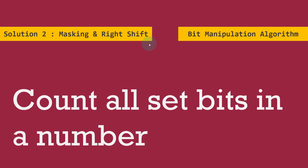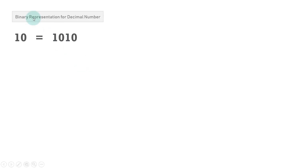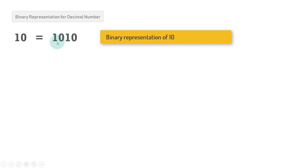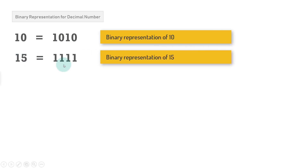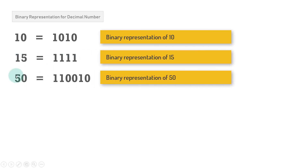This is one of the bit manipulation algorithms. First, I'll explain the problem statement. We have been given a decimal number and we'll look at its binary representation. Decimal 10 has binary representation 1010. For the number 15, we have binary representation 1111. And for the number 50, we have binary representation 110010.